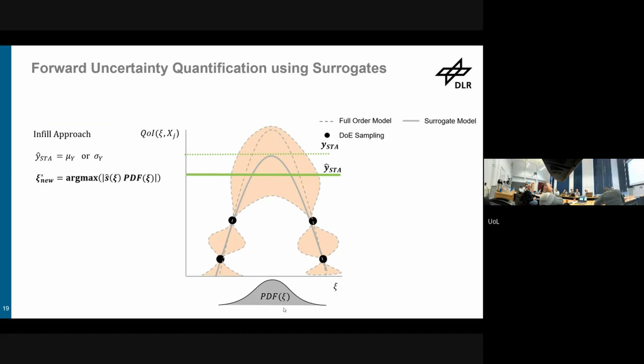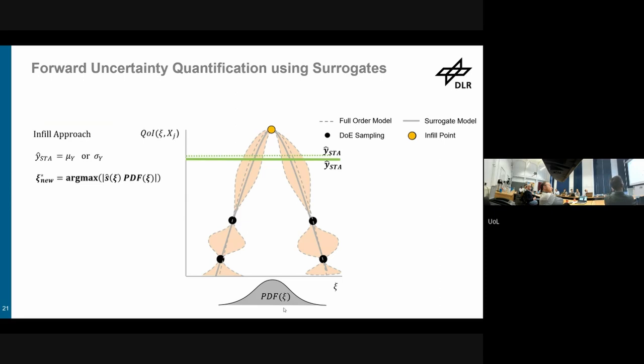So now as a next step, we typically use the Gaussian process with this error estimate that we've seen here. We ask this, and then we do an infill, pretty much asking the model, if you are free to choose the next point and you know the input PDF, where would you do another simulation to improve yourself? And then, you can guess, it does a simulation there, which kind of moves it up there, and you're already significantly closer to it. So in general, if you speak about surrogate modeling, we highly suggest to do this adaptive approach. So do some initial sampling without any pre-knowledge, and then build an initial model, and then add a few samples to the mix to improve the model.